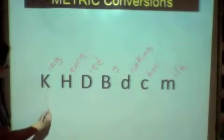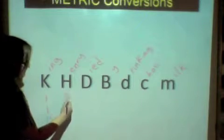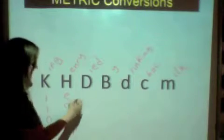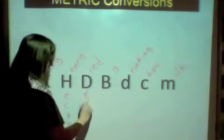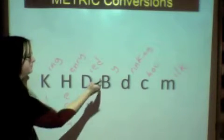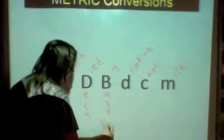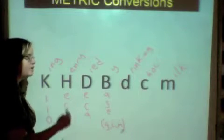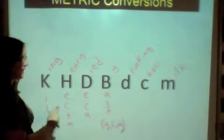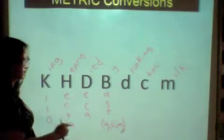Then you have to actually know what they actually stand for. So, K is kilo. H is hecto. Capital D is deca. B stands for base. Grams, liters, or meters. Base is when it's a single letter. There's nothing else attached to the letter.